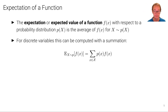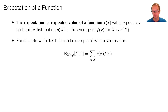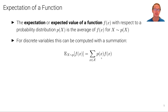For discrete variables, this can simply be computed with a summation. We write this expectation as the expectation of a function of x with respect to a particular distribution p, which equals the sum over all elements of x of p of x — the probability of x — times f of x. You can see that this is a weighted sum of that function, weighted by the probability of the particular sample x.